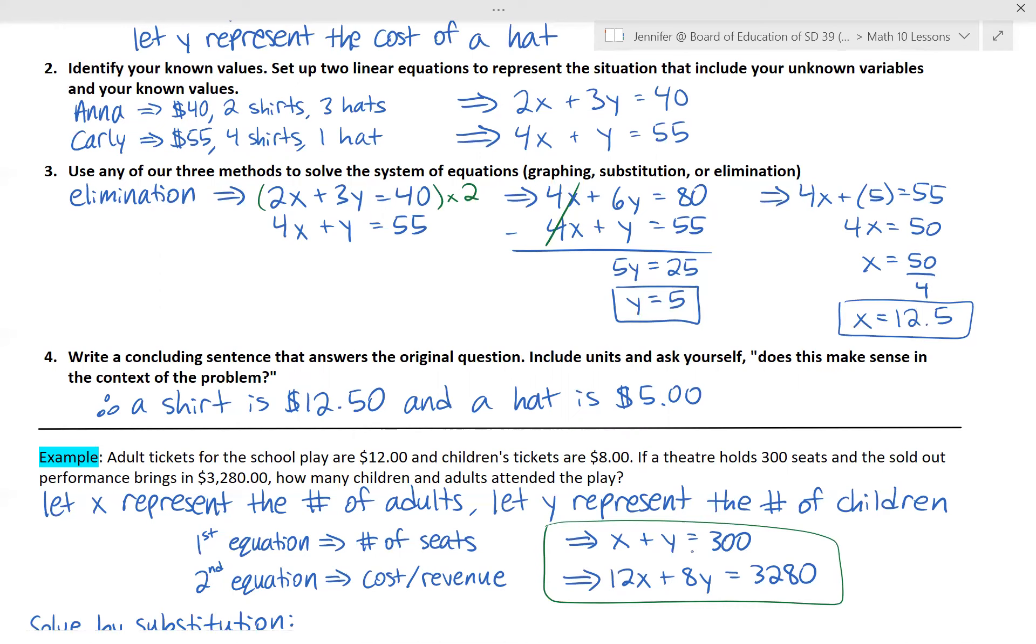The second equation has to do with the cost and revenue. So if adult tickets are $12 and we sold X of them and then you add the cost of children's tickets, $8 times Y, how many children were there, you would get the total amount made of 3,280. So if we knew X and Y, how many of each of these age groups were there, multiplied by the price of their ticket, you should get the total revenue made. Creating the equations is arguably the toughest part of solving word problems with systems.